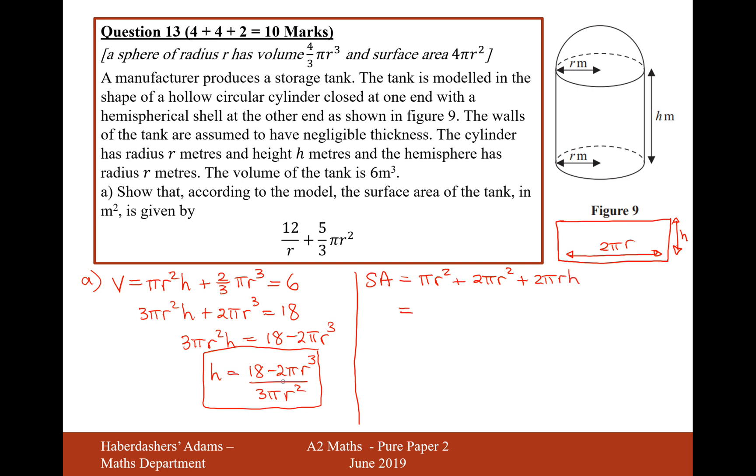We now need to replace h with this expression here. If we combine these 3 pi r squares together, then plus 2 pi r times this expression here, it's going to be 18 minus 2 pi r cubed over 3 pi r squared.